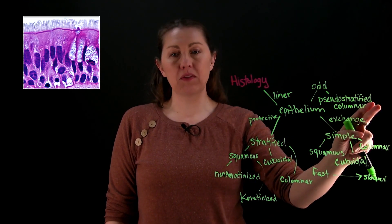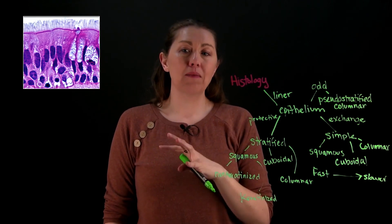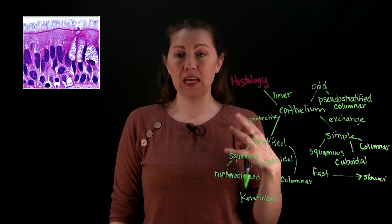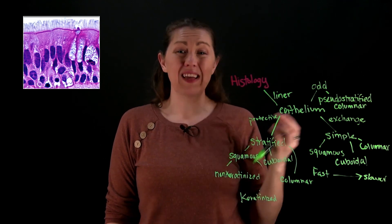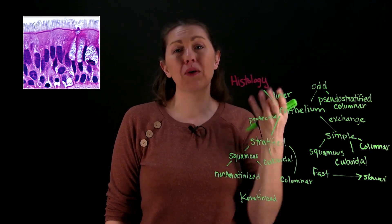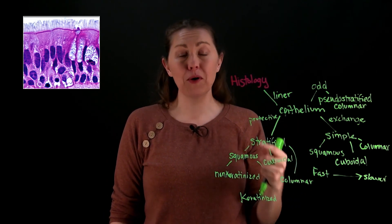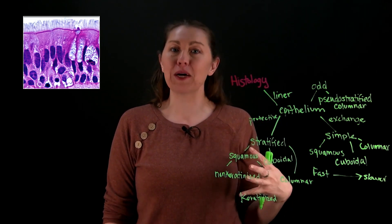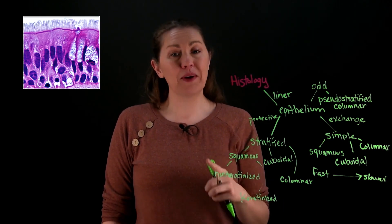An interesting feature of pseudo stratified columnar epithelium is the cilia at the top. This lines the respiratory tract — the trachea, nasal cavity — so goblet cells secrete mucus onto the surface to trap dust particles and debris you breathe in, and the cilia move it to the top of the throat to swallow. If you're a smoker, the cilia are damaged, so you get all that mucus up through a wet hacky cough — the smoker's cough. If you stop smoking, it'll come back.